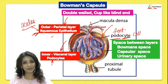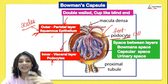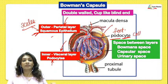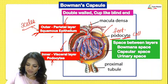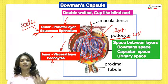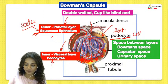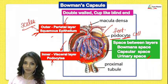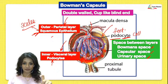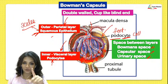There is a space between the outer parietal layer and the inner visceral layer. This is where the blood is filtered — capillaries have small pores through which substances pass. The filtered fluid collects in this space, and since it ultimately becomes urine, the space is called the urinary space, Bowman's space, or capsular space.